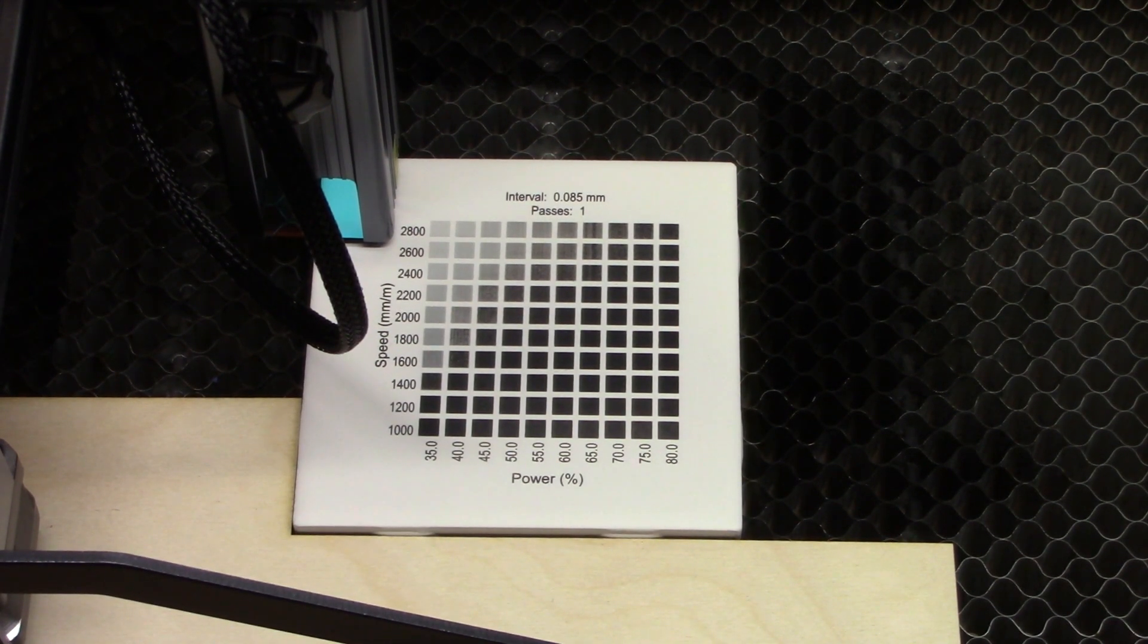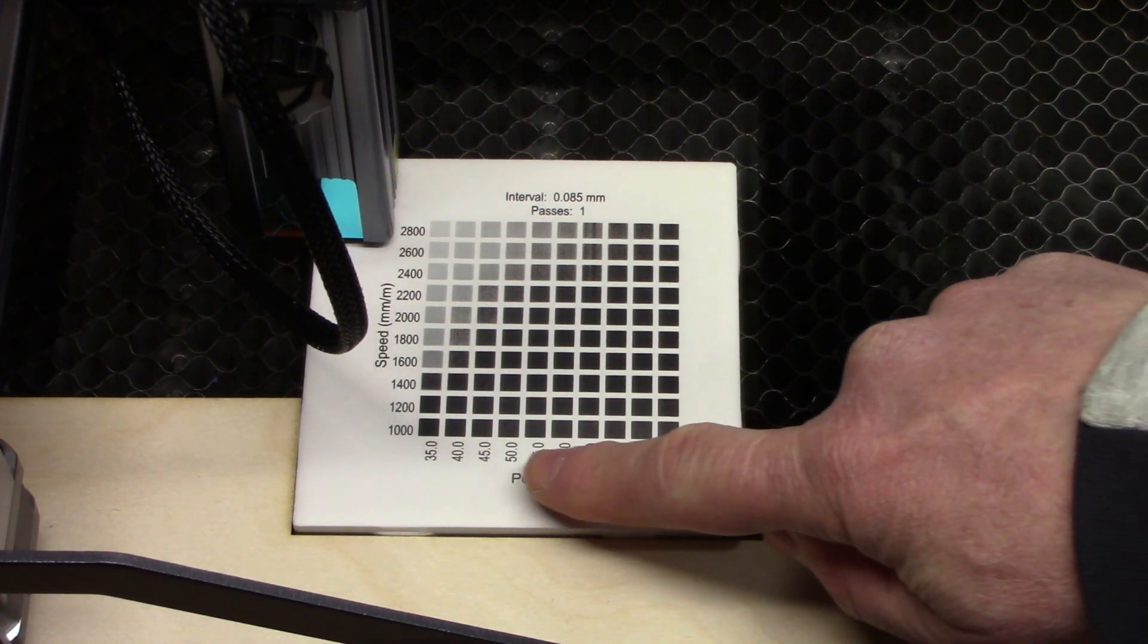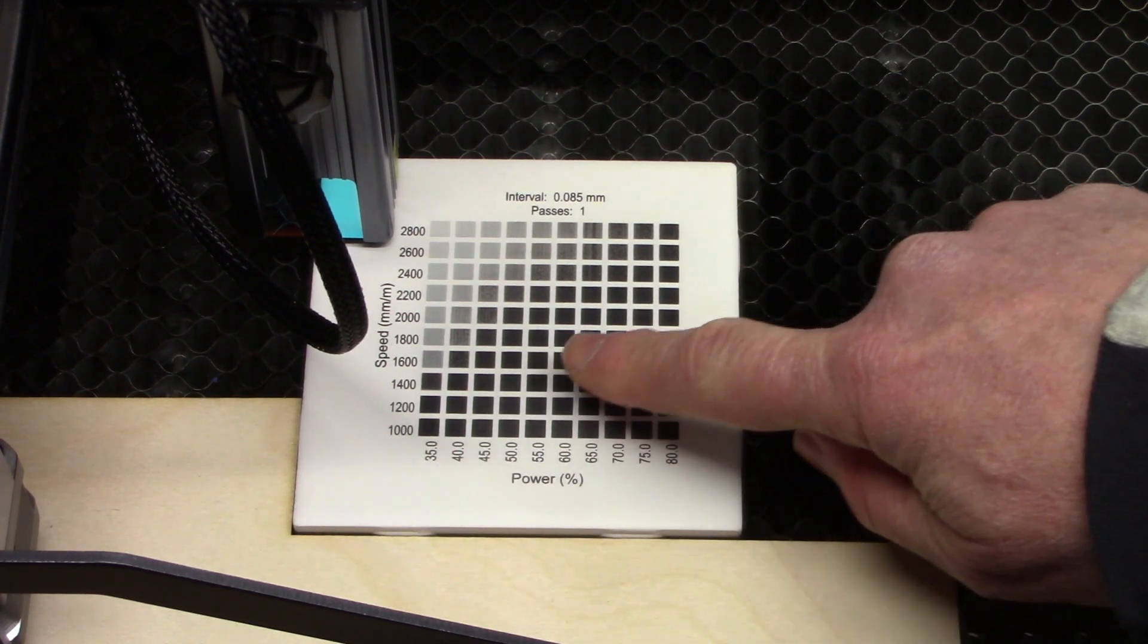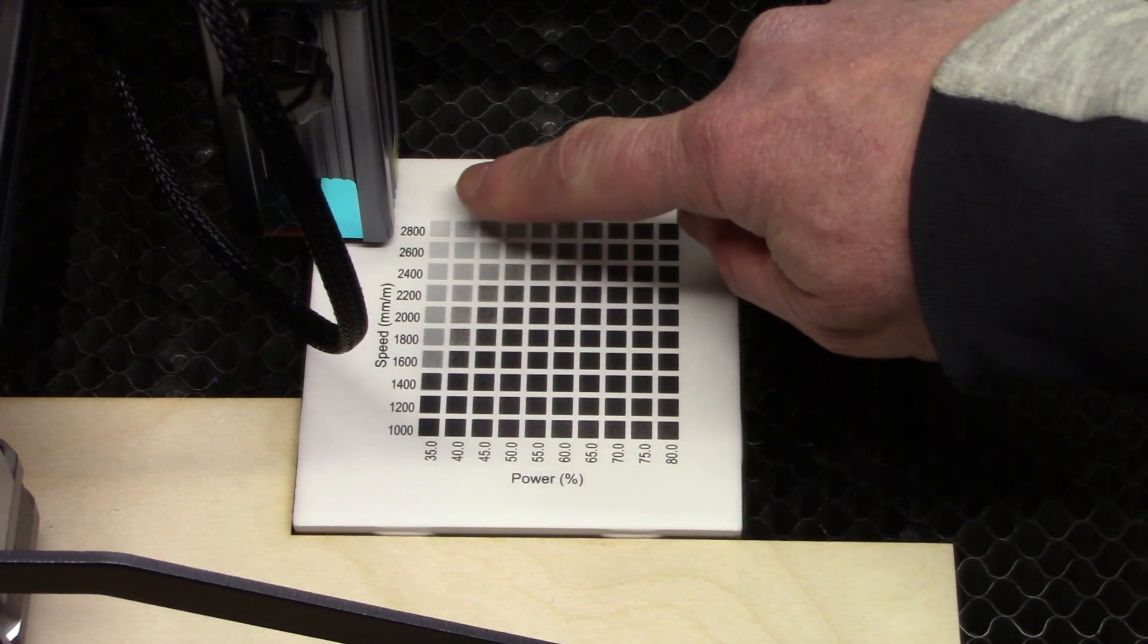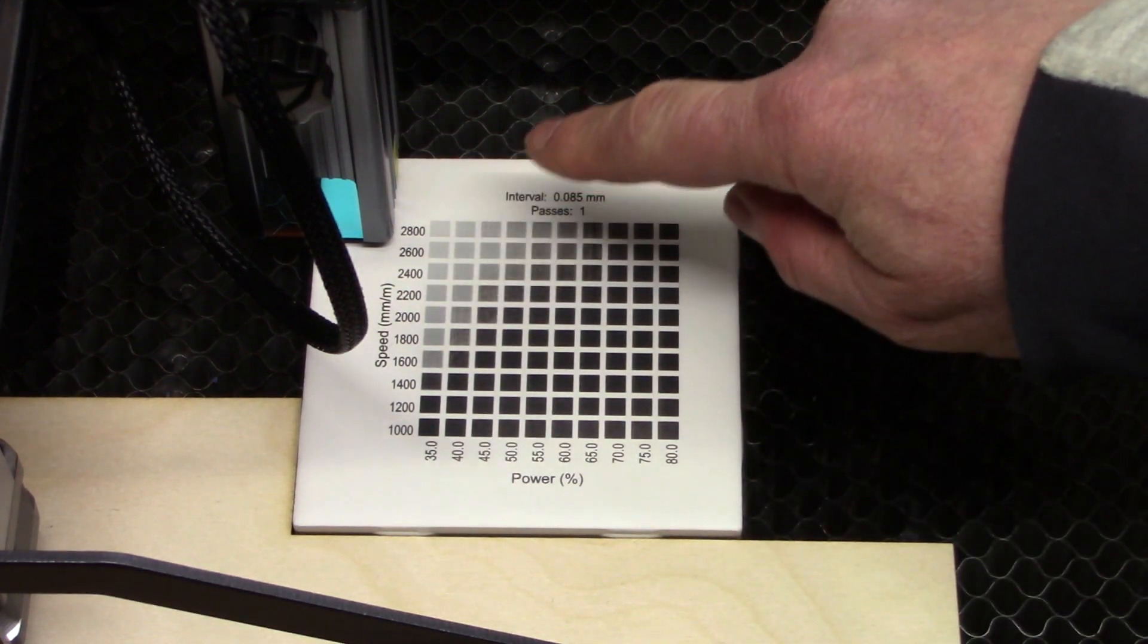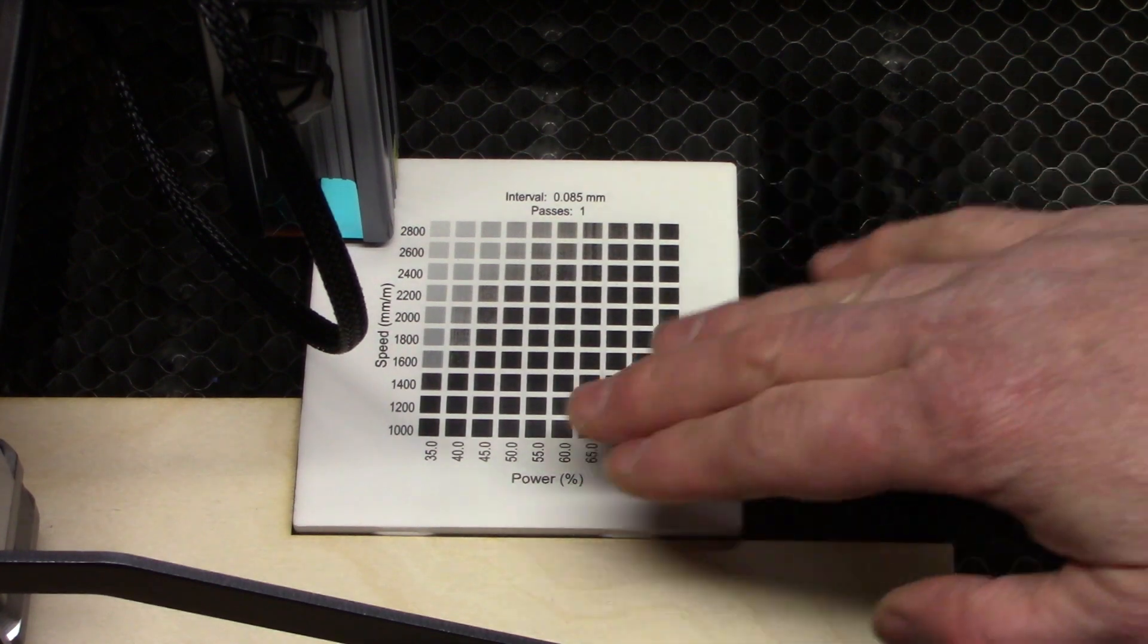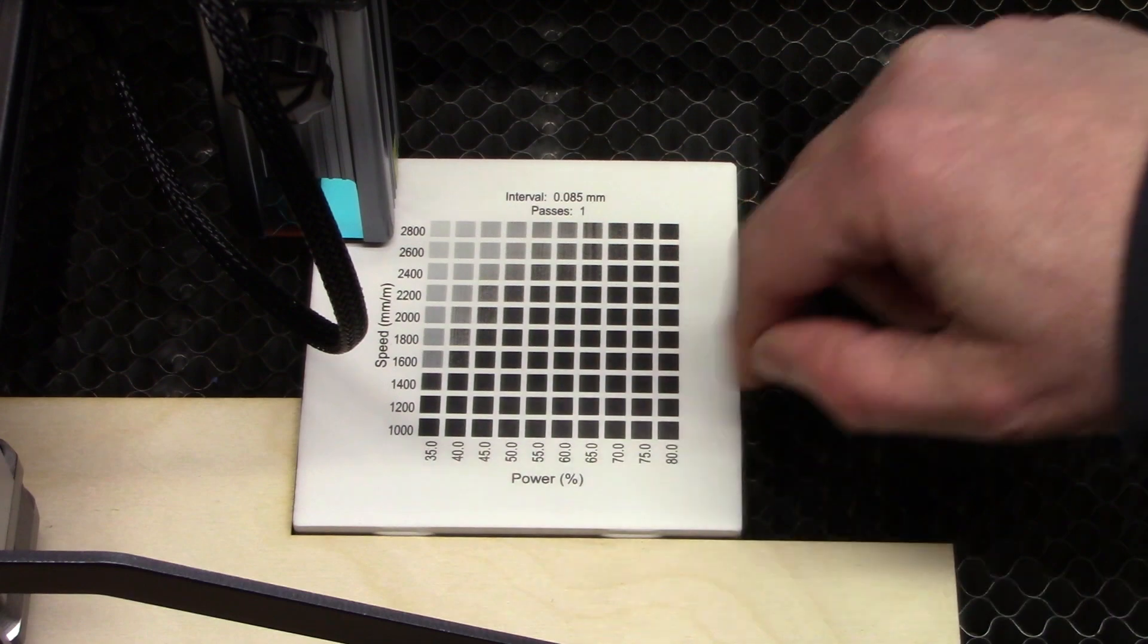This burn initially looks like it has some really good parameters to it. It's nice and black down here in the corner, it stays black all the way over here to the lower power. We have good black through this entire area and then starts to get gray up here at the higher speeds and the lower power. This is the kind of pattern you're looking for. You want something where you got some variety of power and speeds.